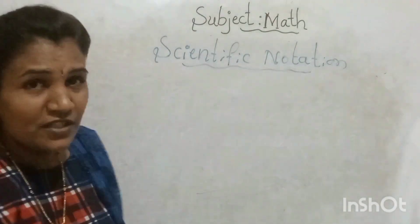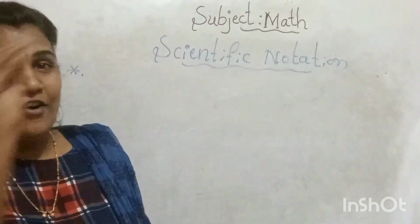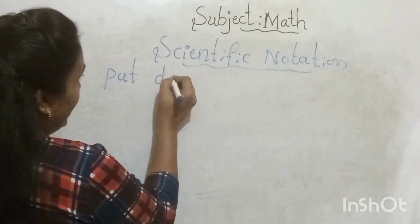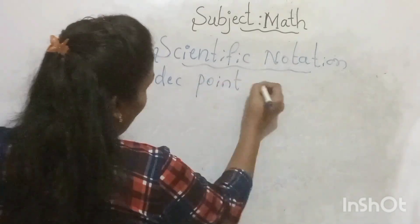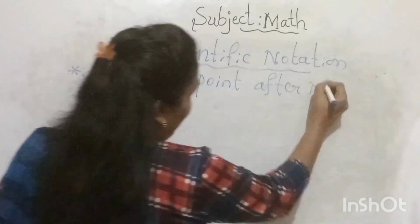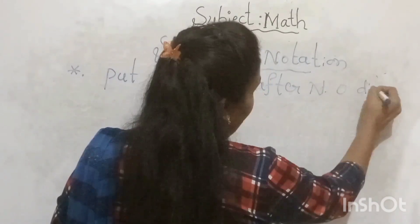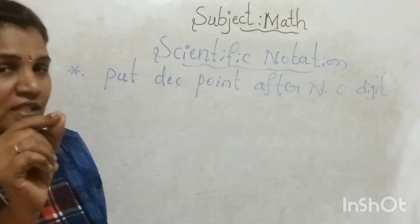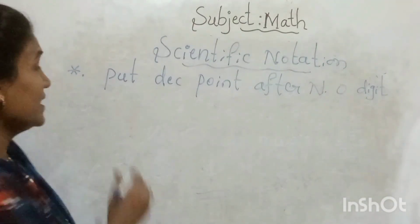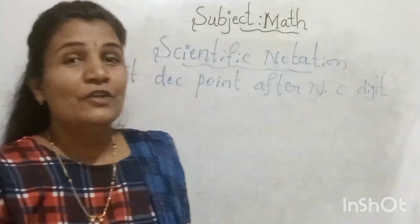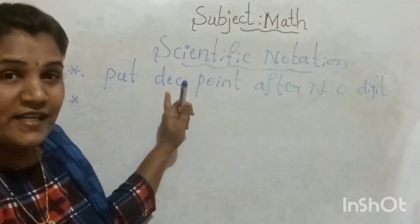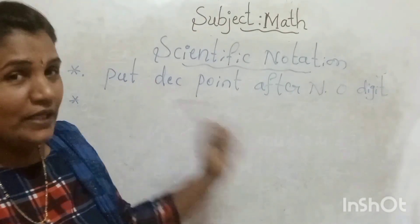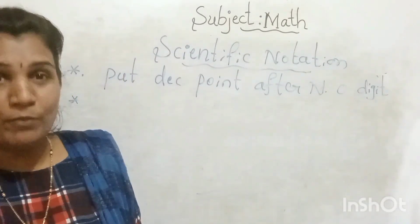First, we need to put the decimal point after the first non-zero digit. So from all the digits except zero, put the decimal point after the first non-zero digit. That is the first rule.